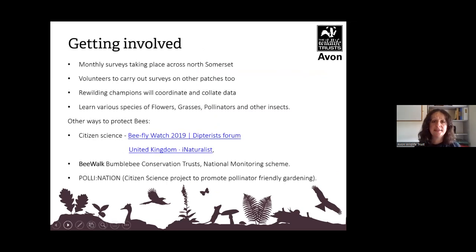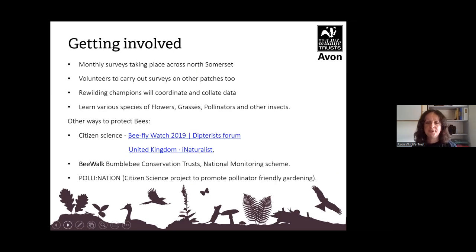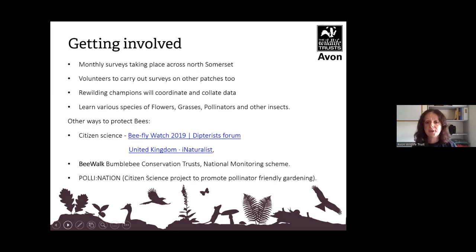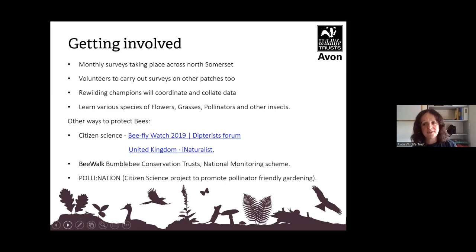Getting involved in the project: there have been monthly surveys taking place across North Somerset. The volunteers carry out surveys on other patches too, and from the many rewilding areas, seven have been chosen for the project. The rewilding champions coordinate and collect data, learning various species of flowers, grasses, pollinators and other insects. There are other ways to get involved — there's a Bee Fly Watch forum for recording bee fly sightings, and an app called iNaturalist where you can upload a photo and experts can help you identify the species.